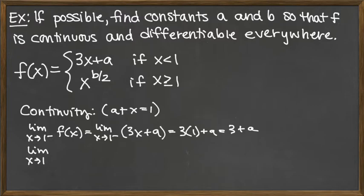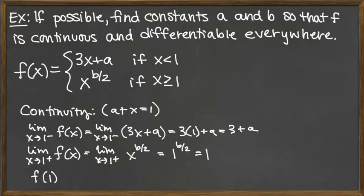We want it to match the limit from the right, which would actually also be, we've got to look at the function value too, but certainly it's got to match the limit from the right if the limit's going to exist. So the limit from the right is going to be what happens when we plug it into the piece that's x to the b over 2. Well, we're talking about plugging 1 in here. So we're talking about 1 to the b over 2. So no matter what b is, 1 to anything is going to be simply 1.